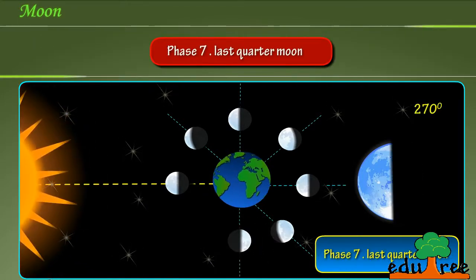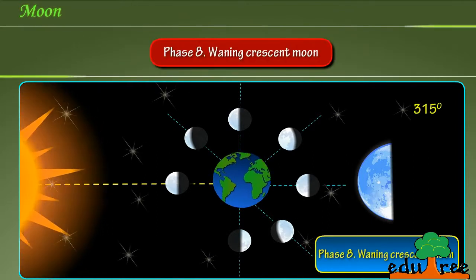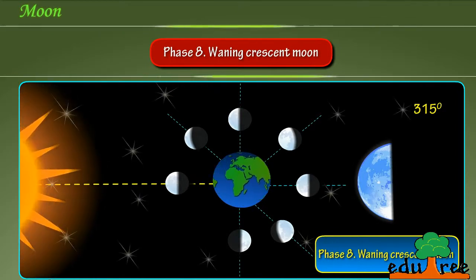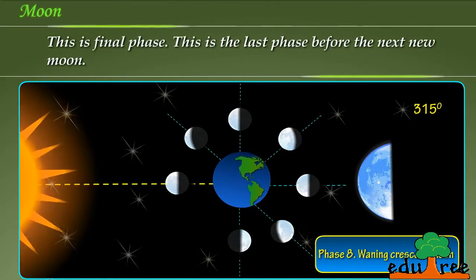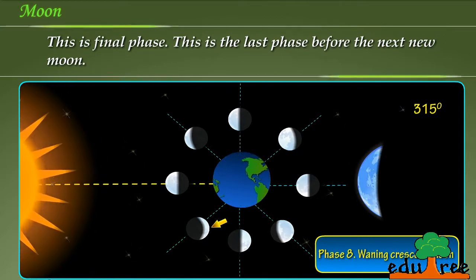Phase 7: Last quarter moon. Phase 8: Waning crescent moon. This is final phase. This is the last phase before the next new moon.